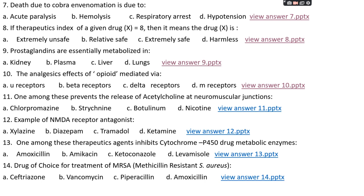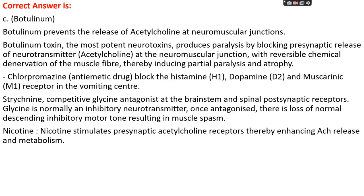Question number eleven: which one prevents the release of acetylcholine at the neuromuscular junction? Option A: chlorpromazine, option B: strychnine, option C: botulinum, or option D: nicotine. The right answer is option C, botulinum. Botulinum actually prevents the release of acetylcholine at the neuromuscular junction. Botulinum toxin is the most potent neurotoxin, producing paralysis by blocking presynaptic release of acetylcholine at the neuromuscular junction, causing chemical denervation of muscle fibers.